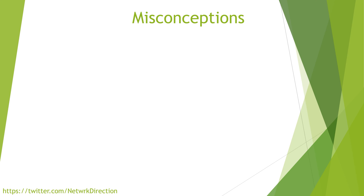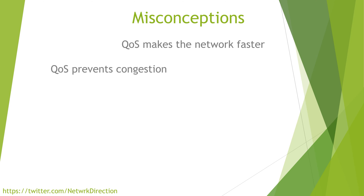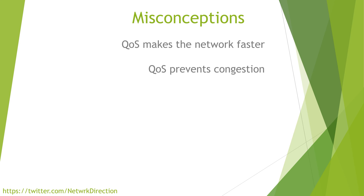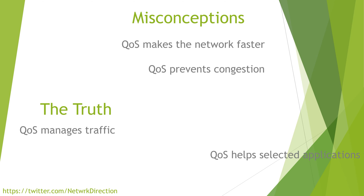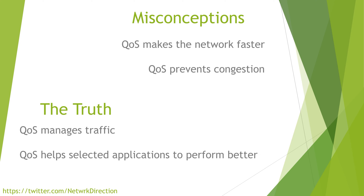Now let's clear up two misconceptions around QoS that you might have heard. First, that it makes the network faster — this simply isn't true. The only way to make the network faster is to add more links, faster links, or better equipment. The second is that QoS prevents network congestion — this is also not true. The only way to truly prevent congestion is to have so much network capacity that you will not fill it. So why do these misconceptions exist? When your links are full of traffic, QoS helps us to manage that traffic. By managing the traffic better, QoS helps certain applications to perform better. However, the link is still full, so while QoS helps one application to perform better, it may be at the expense of another application.